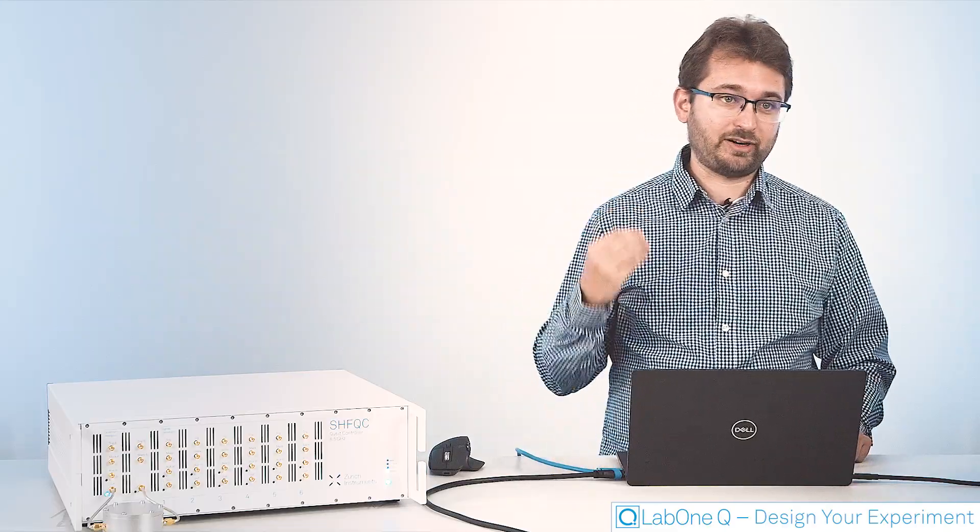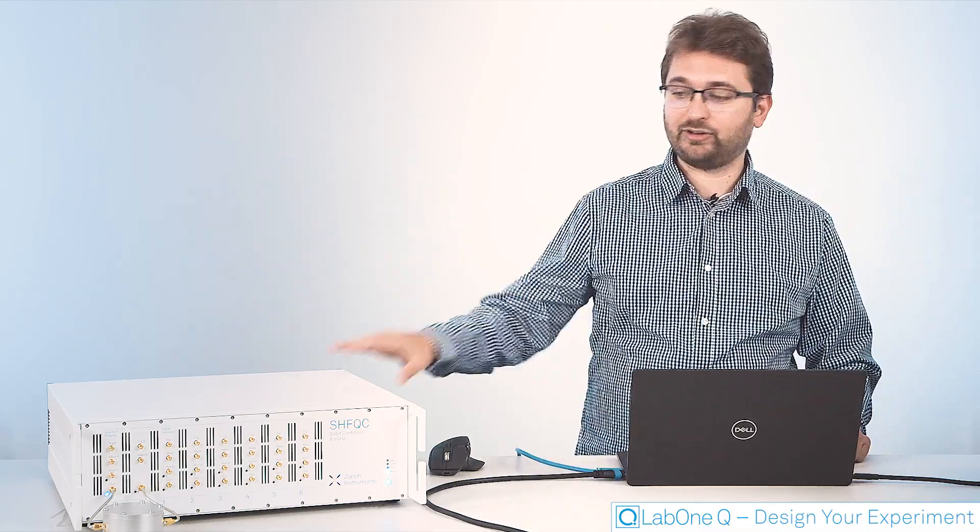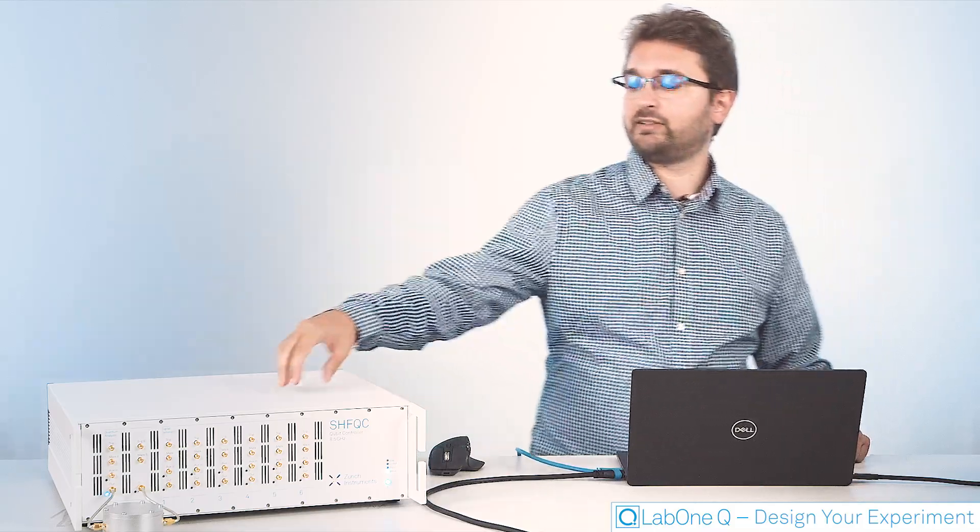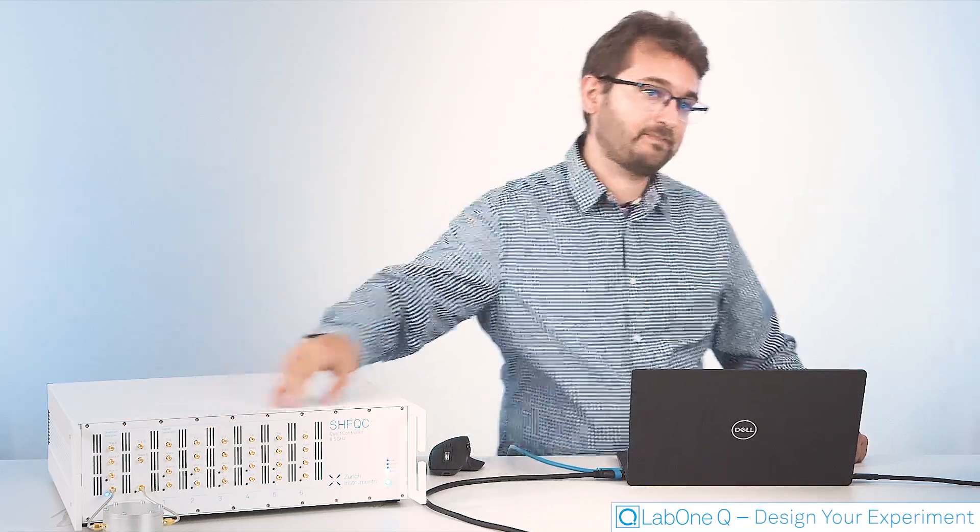After that we are going to run this experiment in two different configurations to send some RF pulses to our resonator over here using this HFQC. Then we will see how to extend this pulse resonator spectroscopy from a 1D sweep where only the frequencies change to a 2D sweep where frequency and power sent to the resonator are swept at the same time. You will see how easy it is after you learn the basics to change one experiment to the other using the DSL that Lab1Q provides.